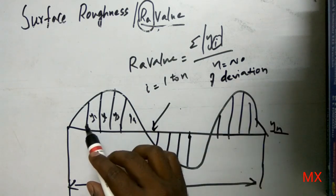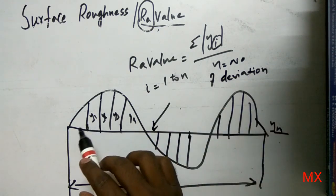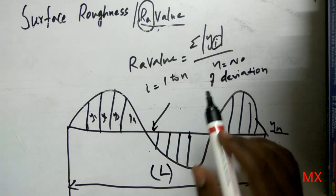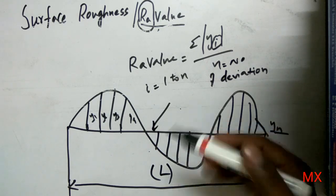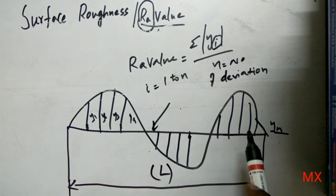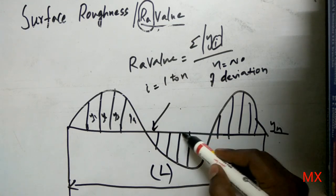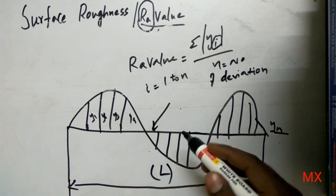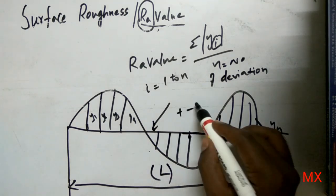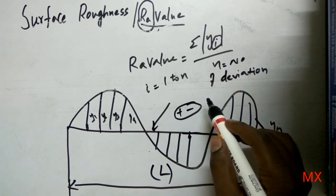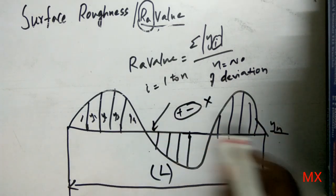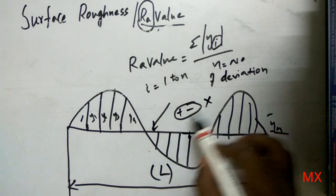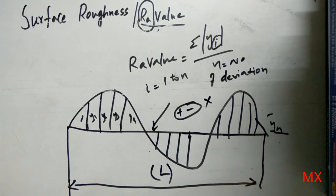Y1 is one deviation, Y2 another deviation, and so on up to Yn. Ra value is simply defined as the arithmetic average of Y1 to Yn from the mean line, without considering the algebraic signs — that is, you should not consider the positive and negative signs. This arithmetic average of Y1 to Yn without sign is termed to be the Ra value.